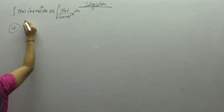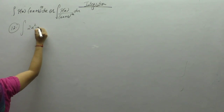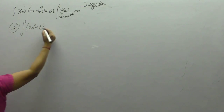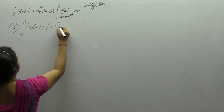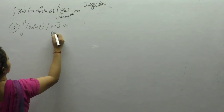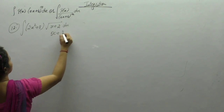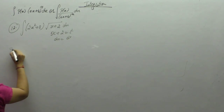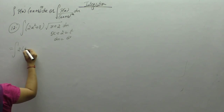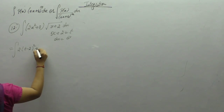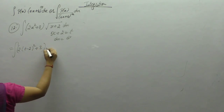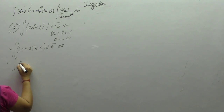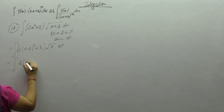Next, the integral of (2x squared plus 3) into square root of (x plus 2) dx. Put x plus 2 as t, so dx is dt and x is t minus 2.